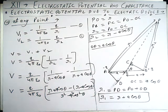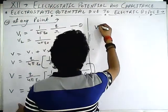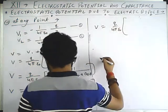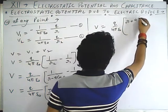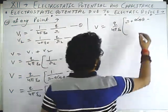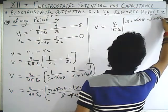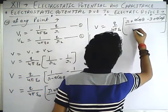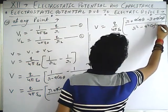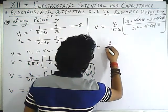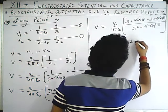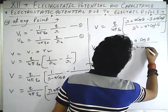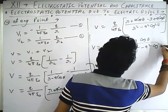Simplifying the numerator: r cancels with r, leaving 2a cos theta. So V equals Q upon four pi epsilon naught into 2a cos theta upon r squared minus a squared cos squared theta.